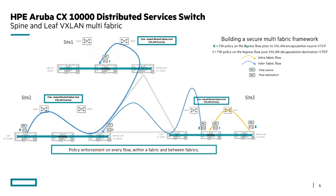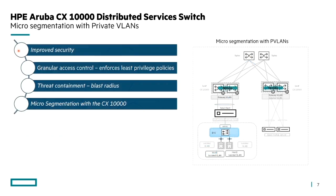This provides policy enforcement on every flow within a fabric and between fabrics — a great way to secure the environment in a multi-fabric architecture. We also retain options for seamless insertion, flow threading visibility with telemetry, and DDoS protection on every CX 10,000 switch.